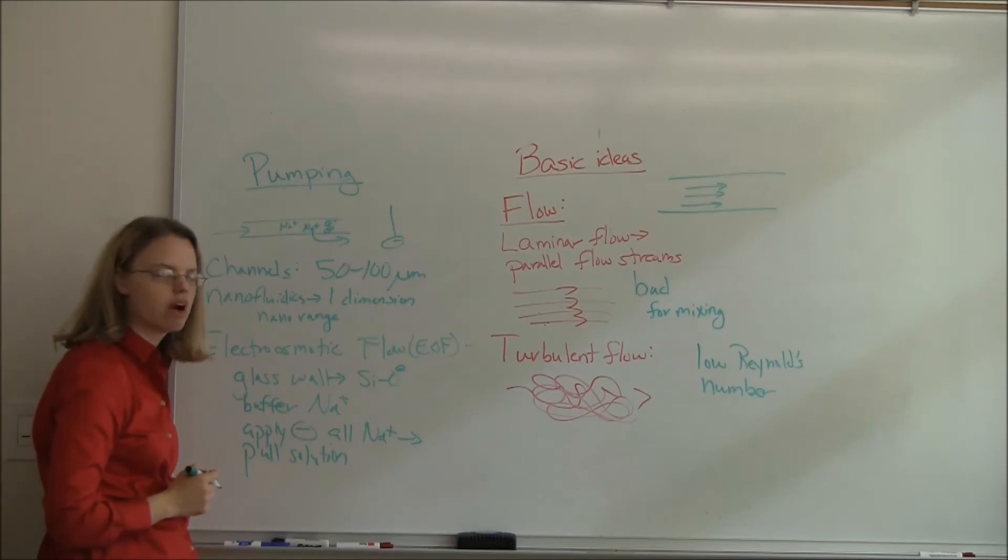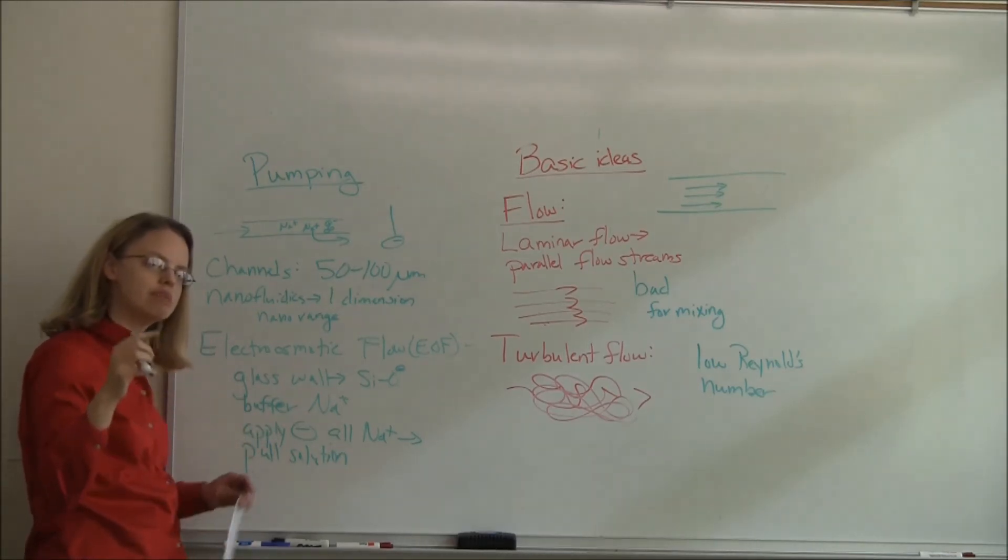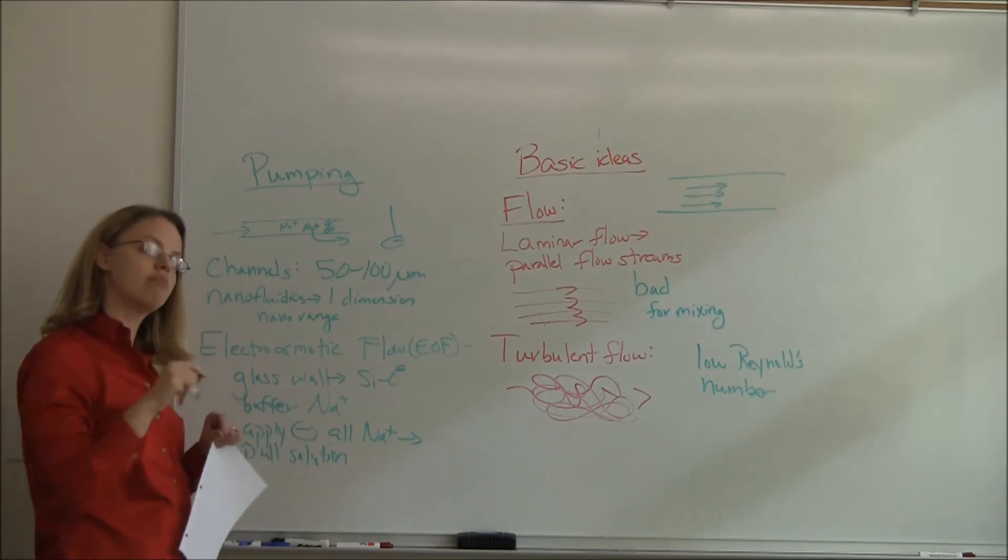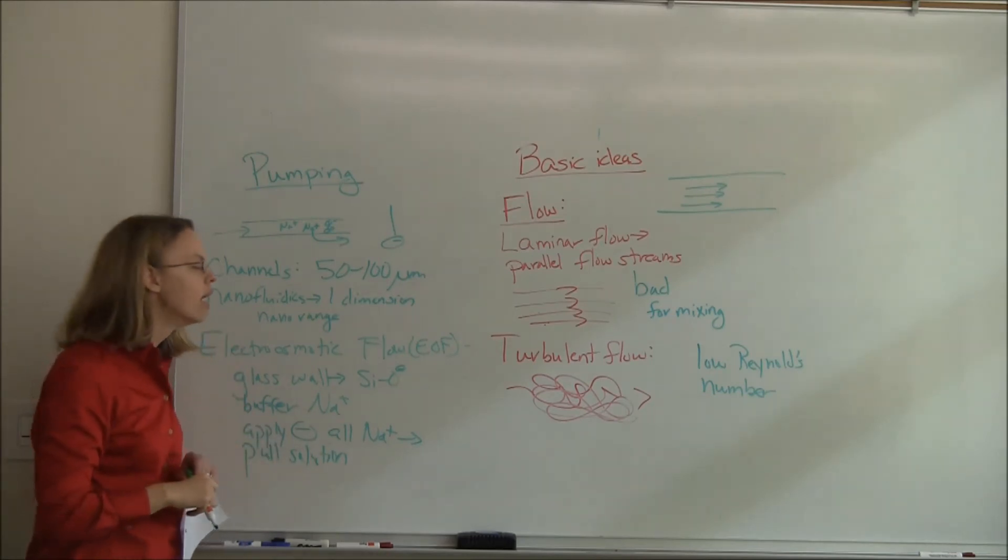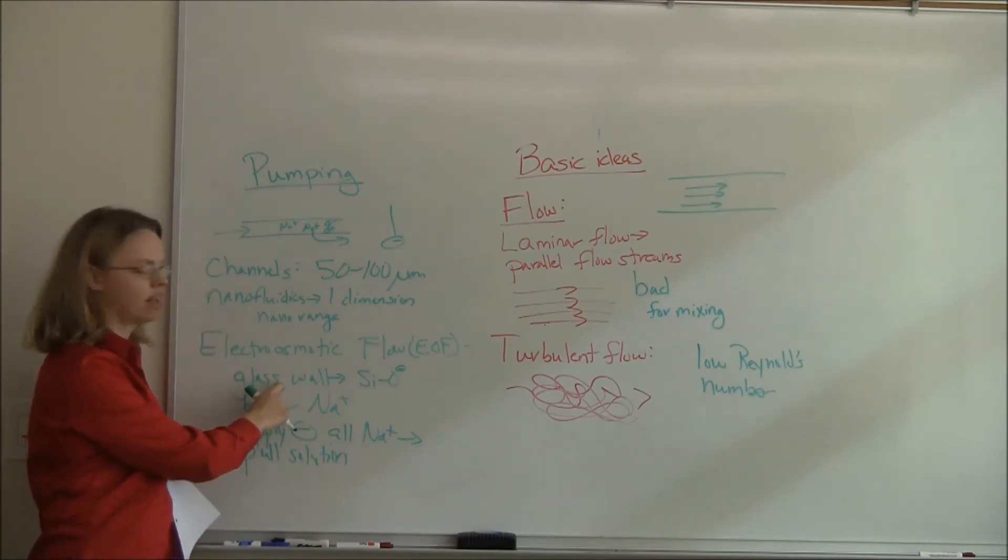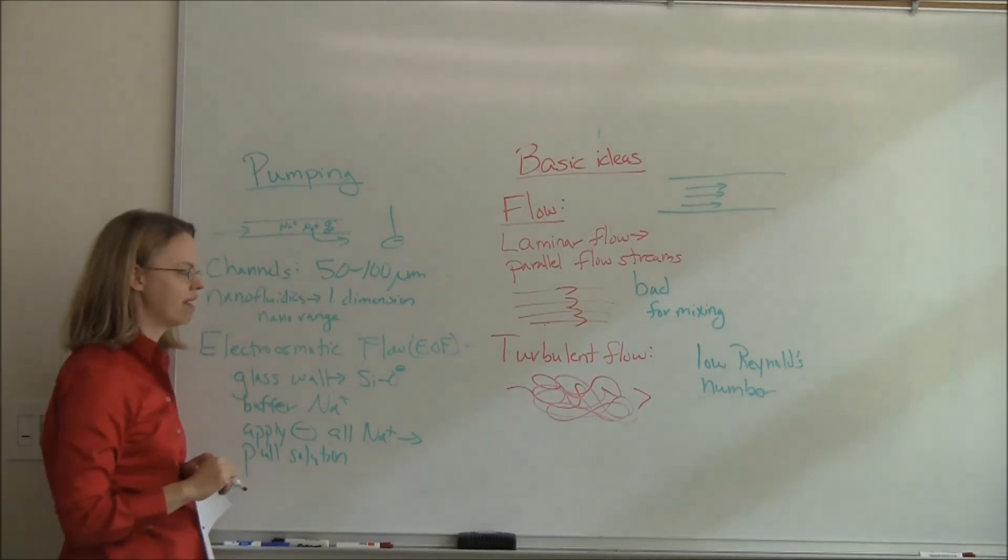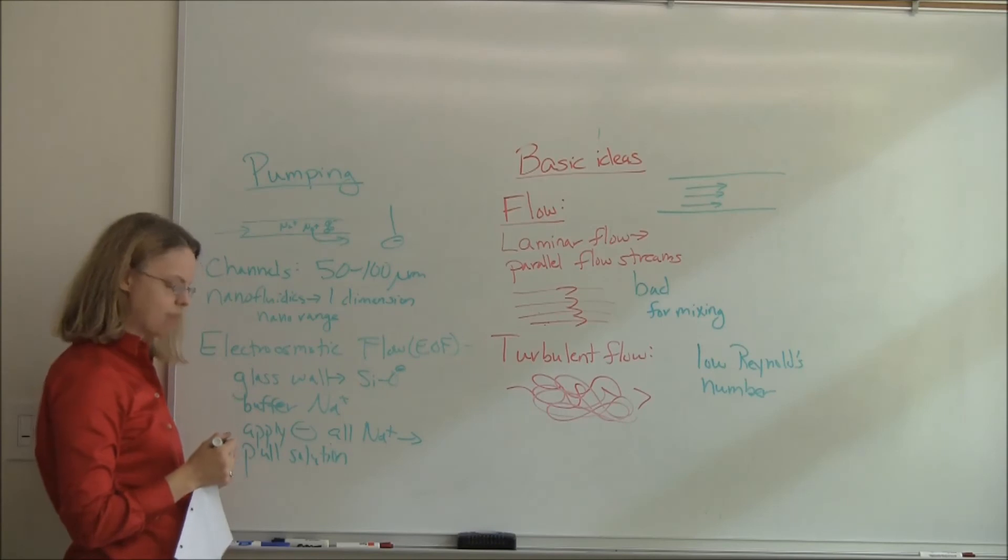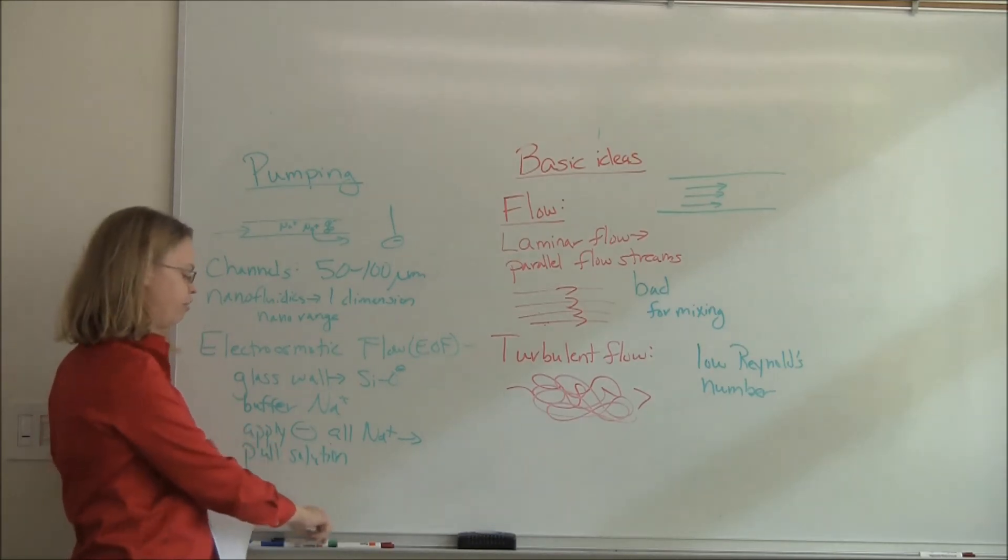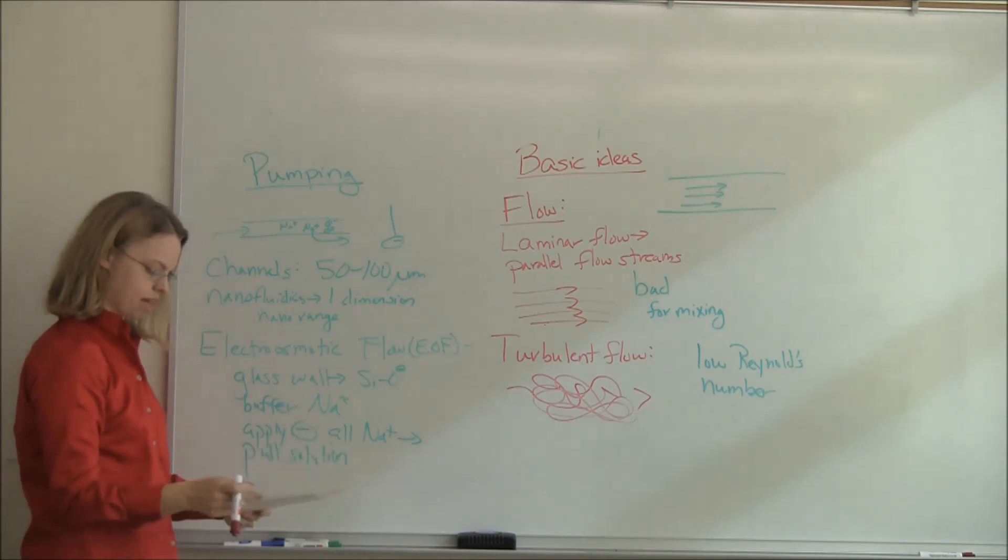So that flow is called electro-osmotic flow. And so it's really convenient in a microfluidic chip because it means you just basically stick in two little electrodes, apply voltage, and you get your stuff to go. And so this works really well on glass chips, not as well on PDMS, which we'll talk about in a minute. But that's the way people typically get their fluid to flow around their chip is to use this electro-osmotic flow.